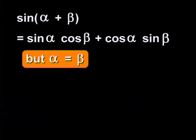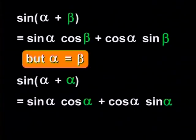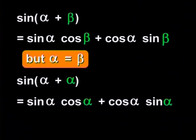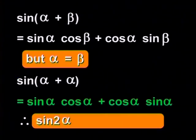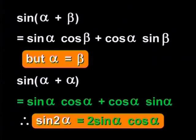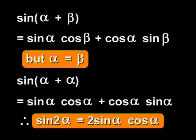If alpha equals beta, then I just replace each beta with an alpha. This side is sine two alpha, and these two products are actually like terms, so I can add them together giving me two sine alpha cosine alpha. Hey, that's pretty neat. Yes it is, and you'll find it really useful in solving equations and proving identities.